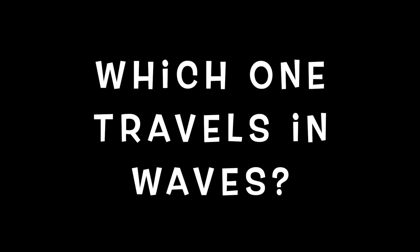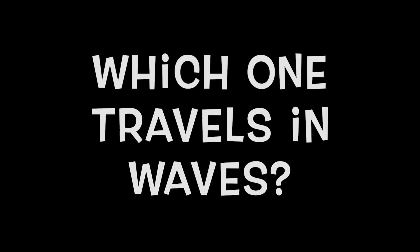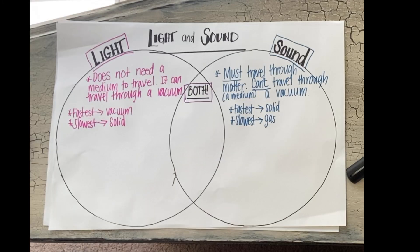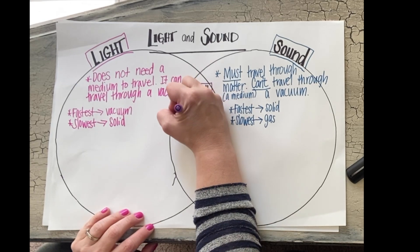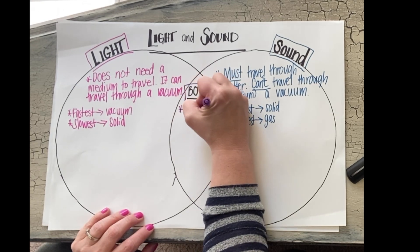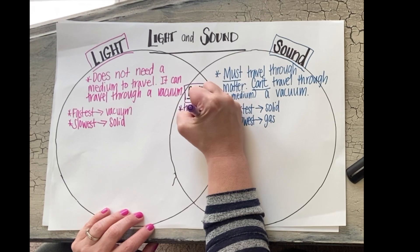Which one travels in waves? Does light travel in waves? Does sound travel in waves? Is that a way they are different or alike? Well, actually both light and sound travel in waves, so they are going in that center overlapped part of our Venn diagram.